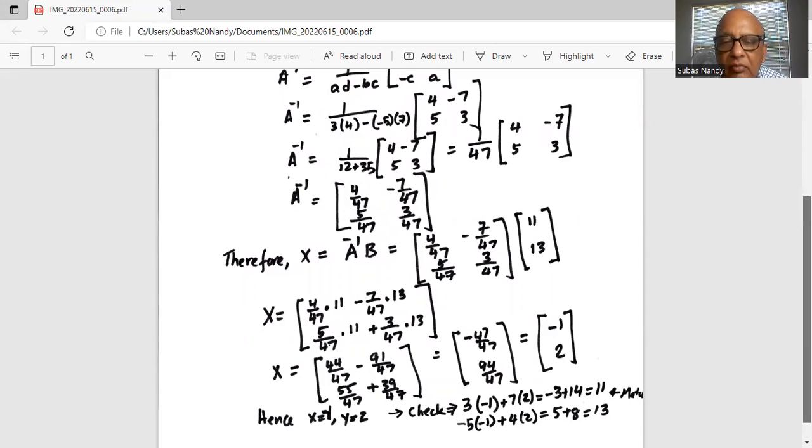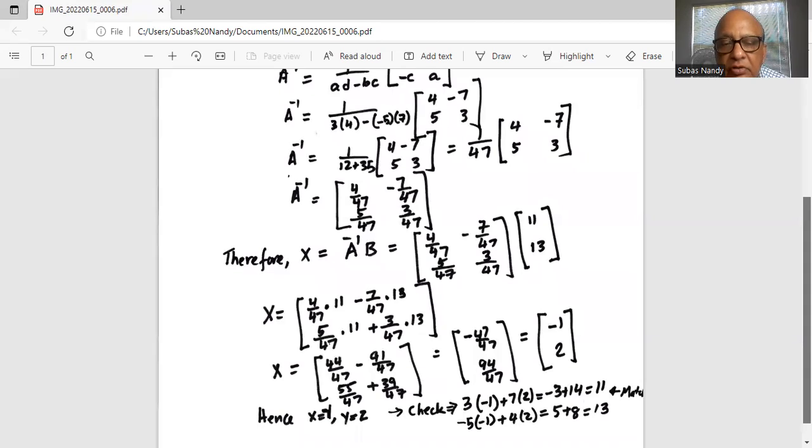So 44 minus 91 is minus 47 divided by 47. Second row: 55 plus 39 is 94 divided by 47. So 47 divided by 47 is 1, with a minus sign: minus 1. And 94 divided by 47 is 2.